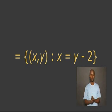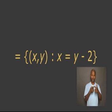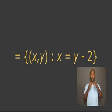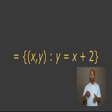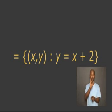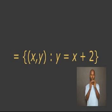Notice that the first coordinate is the second coordinate minus 2. We can thereby solve for Y. The inverse of R equals the ordered pair (X, Y), such that Y equals X plus 2.